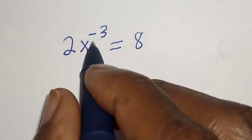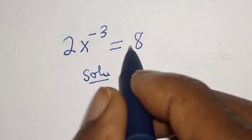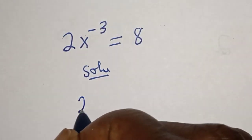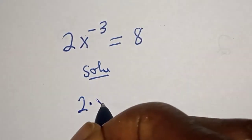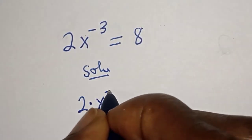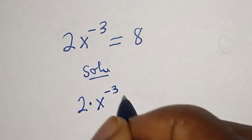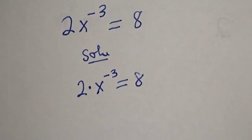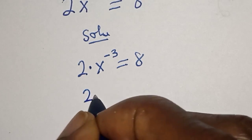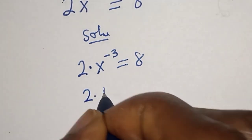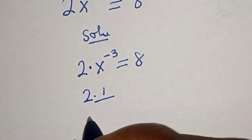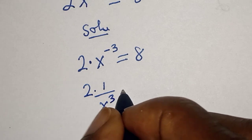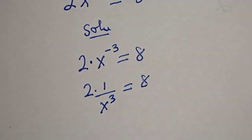Solution: 2s raised to power minus 3 is equal to 8. This can be written as 2 multiplied by s raised to power minus 3 is equal to 8, then this is 2 over s raised to power 3 is equal to 8.